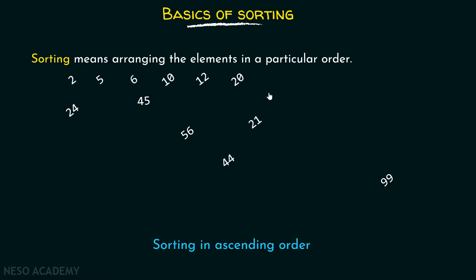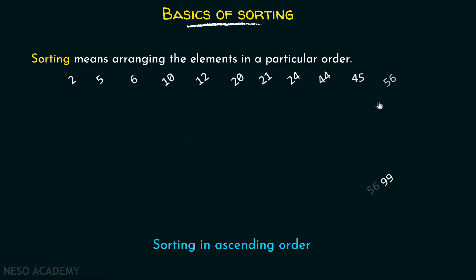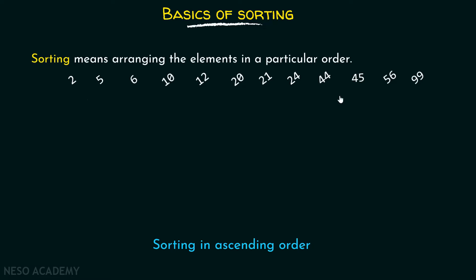Then 20, then 21, then 24, then 44, then 45, then 56, and finally 99. You can see that the elements are now placed in ascending order. The smallest element is at the first position and the largest element is at the last position. So the elements are arranged in a particular order — that's why we can say that these elements are now sorted.